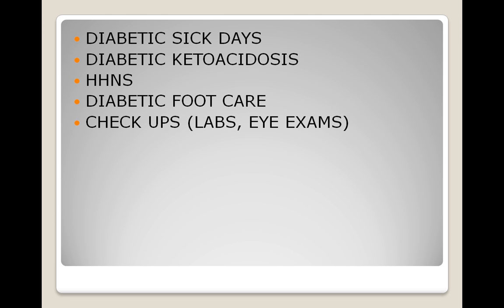It's also important to assess BUN and creatinine in this patient. With blood sugars of 600 to 2000, they may have sustained kidney damage due to the elevated glucose levels exceeding the renal threshold. We need to ensure electrolyte replacement — potassium, sodium, chloride, and phosphate may all need to be administered IV. This patient will also be placed on an insulin drip.